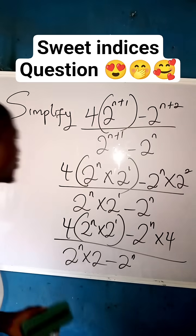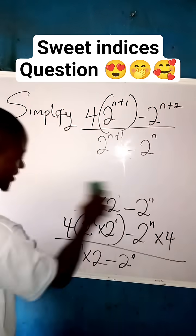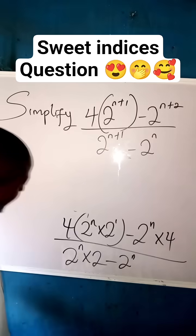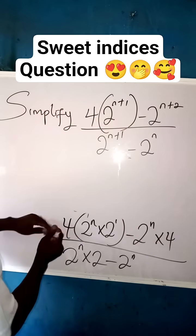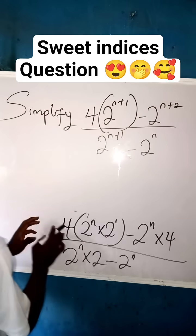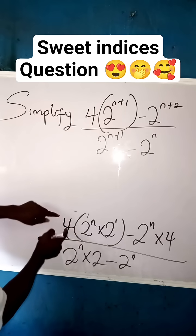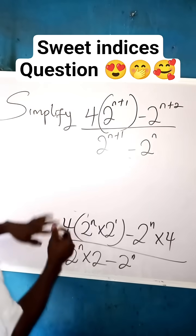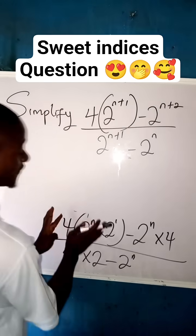If you have this kind of question, it's very simple. What you are going to do next is factor out 4 times 2 to the power of n. If you look at this, you have 4 times 2 to the power of n times 2, so let us factor out 4 times 2 to the power of n.